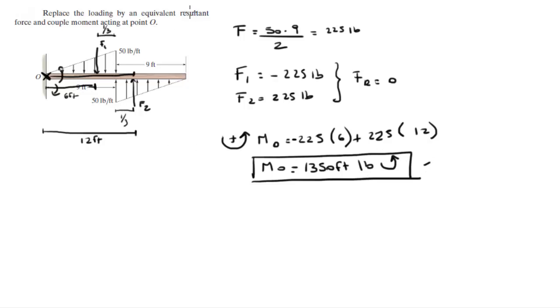So the resultant force is 0 and the couple moment acting at O is 1350 foot-pounds.